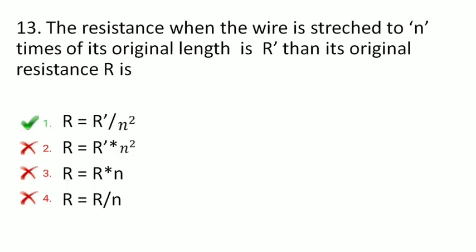Next is: the resistance when a wire is stretched to n times its original length is R'. Then its original resistance R is — R' by n squared, R' into n squared, R into n, or R by n? The correct option is R' by n squared. So the original resistance is R' by n squared.